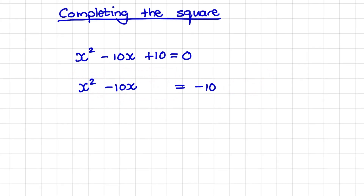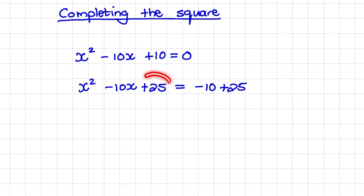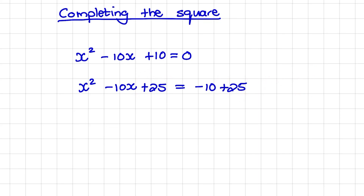In order to complete the square, we would add the square of half of negative 10. Half of negative 10 is negative 5, and negative 5 squared is equal to positive 25. So I can add positive 25 to the left hand side of my equation and repeat that calculation on the right hand side. You can see that our equation still balances out because we added the same amount on the left and on the right.